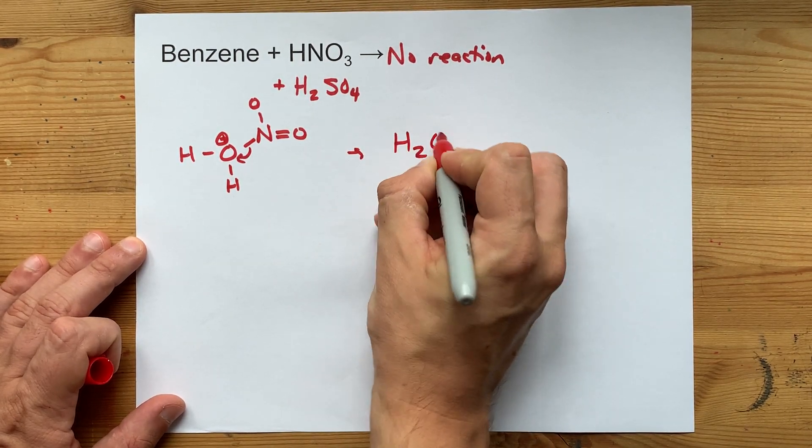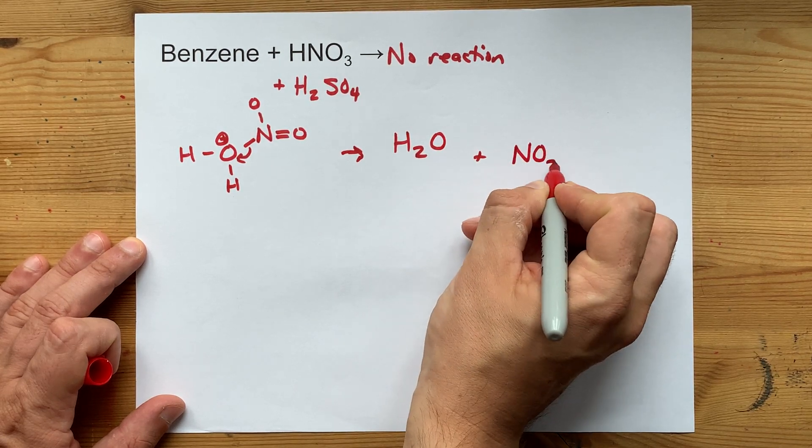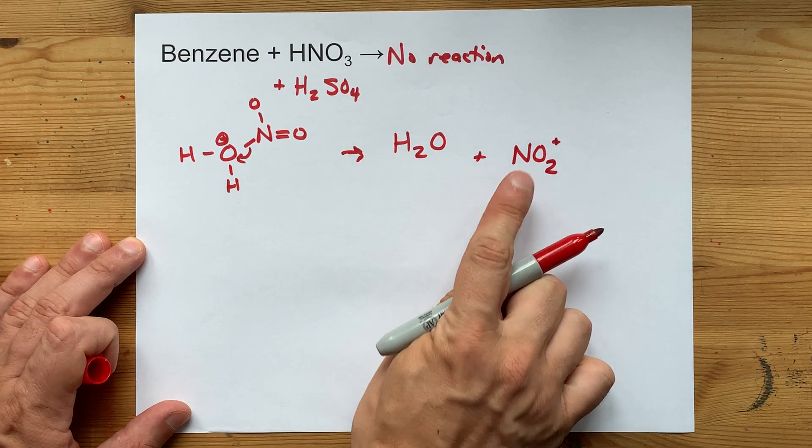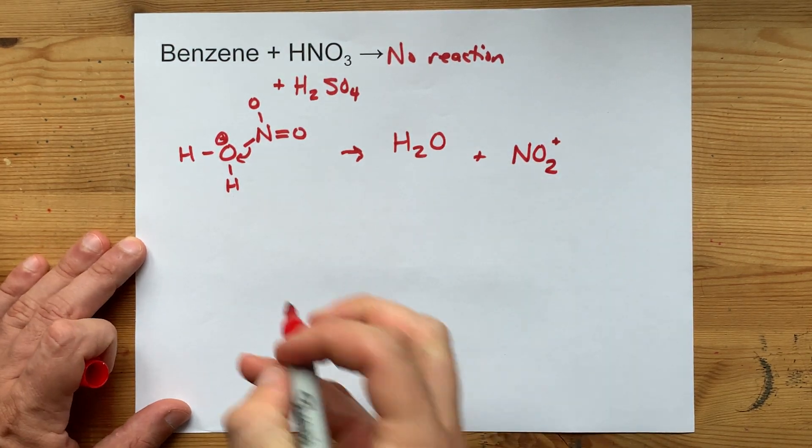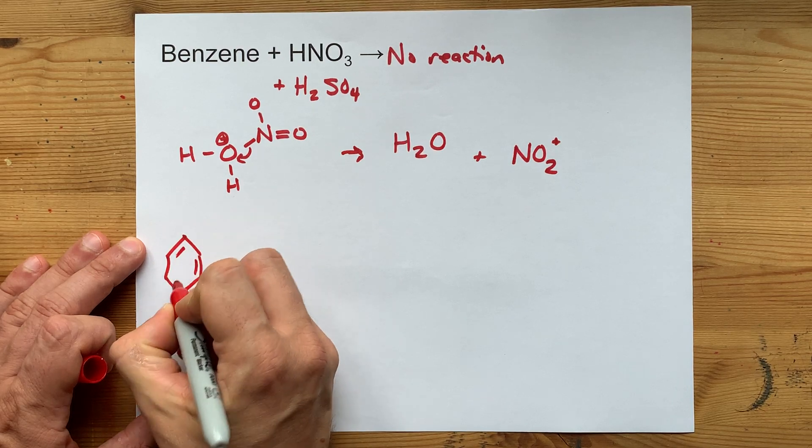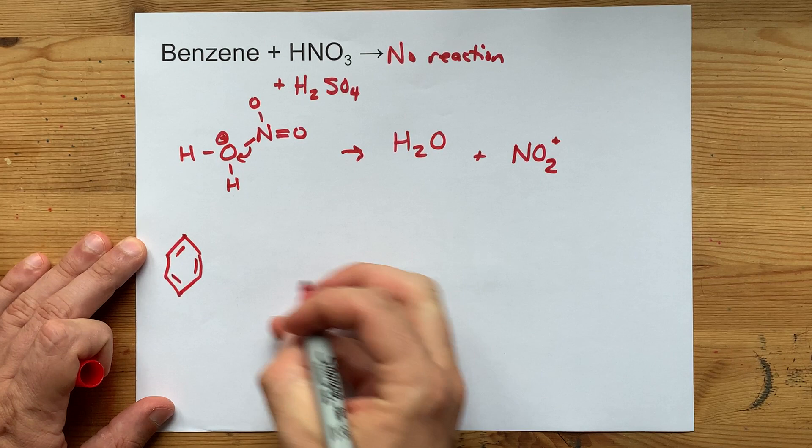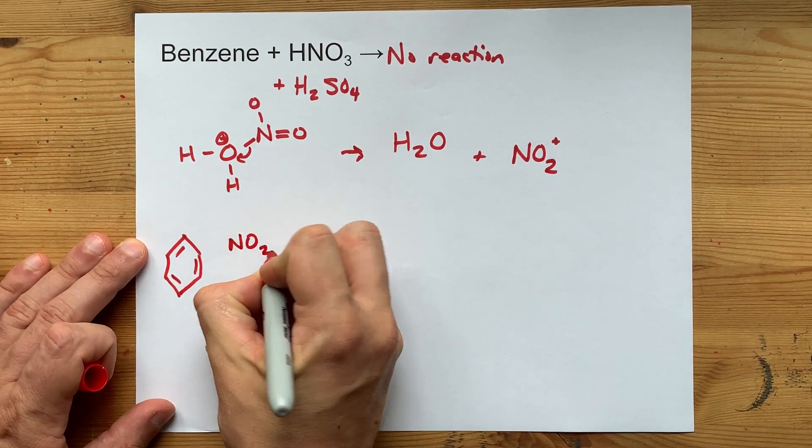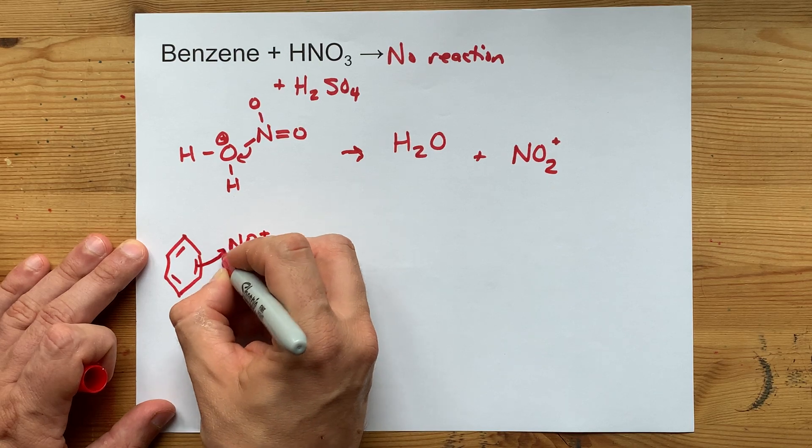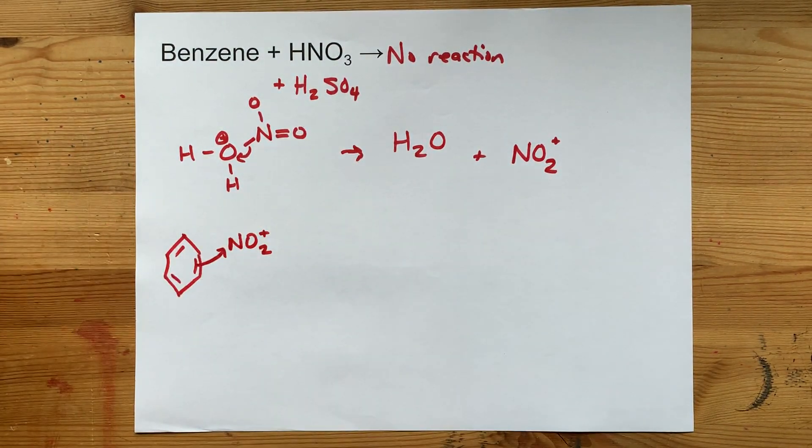That gives you water as a product, as well as an NO2 plus ion. Now that NO2 plus is an electrophile, and so you can do an electrophilic substitution on benzene the same way you do for Cl2 and Br2. That NO2 with a positive charge is quite attractive to one of the double bonds of benzene.